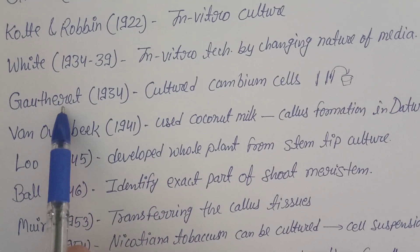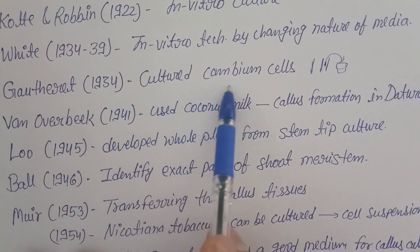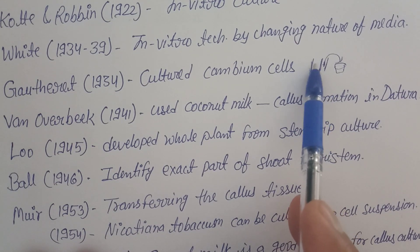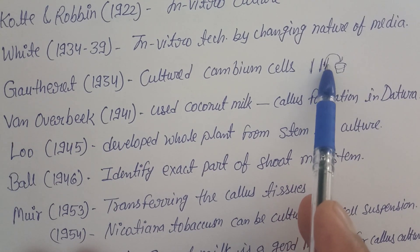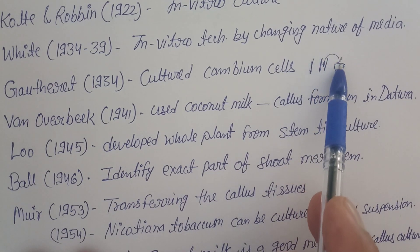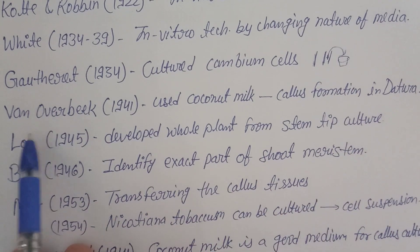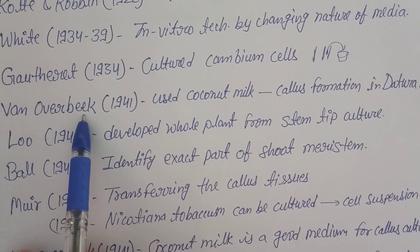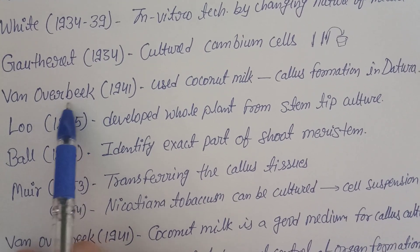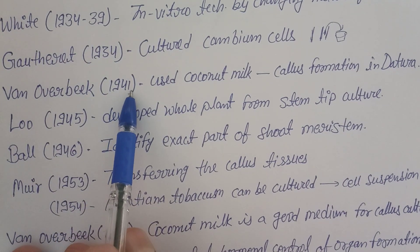Gautheret in 1934 cultured cambium cells. In a stem, between the wood and bark there is the cambium layer. If that cambium can be isolated and cultured in different media with the right nutrients, it can grow. This was an important contribution to plant tissue culture at that time.